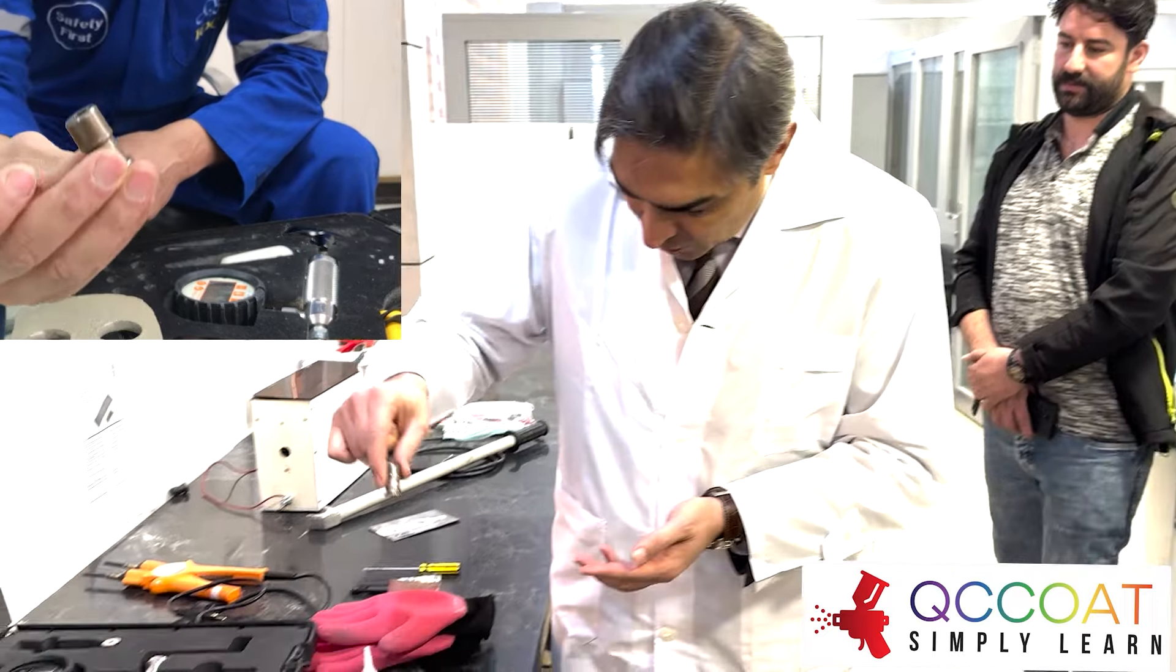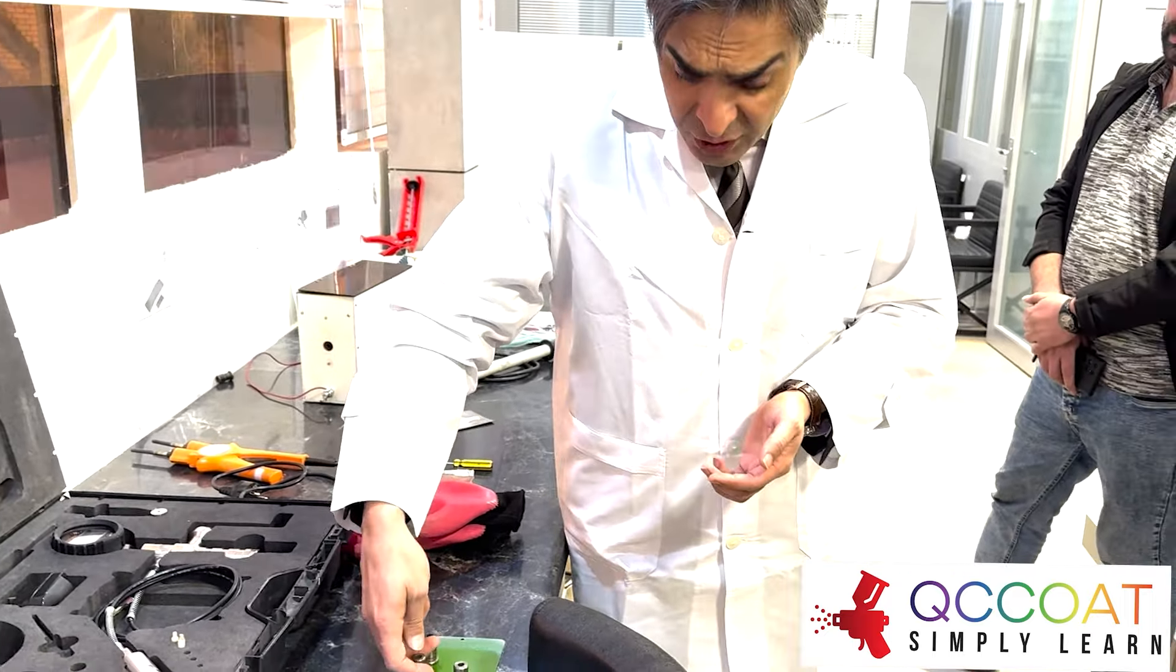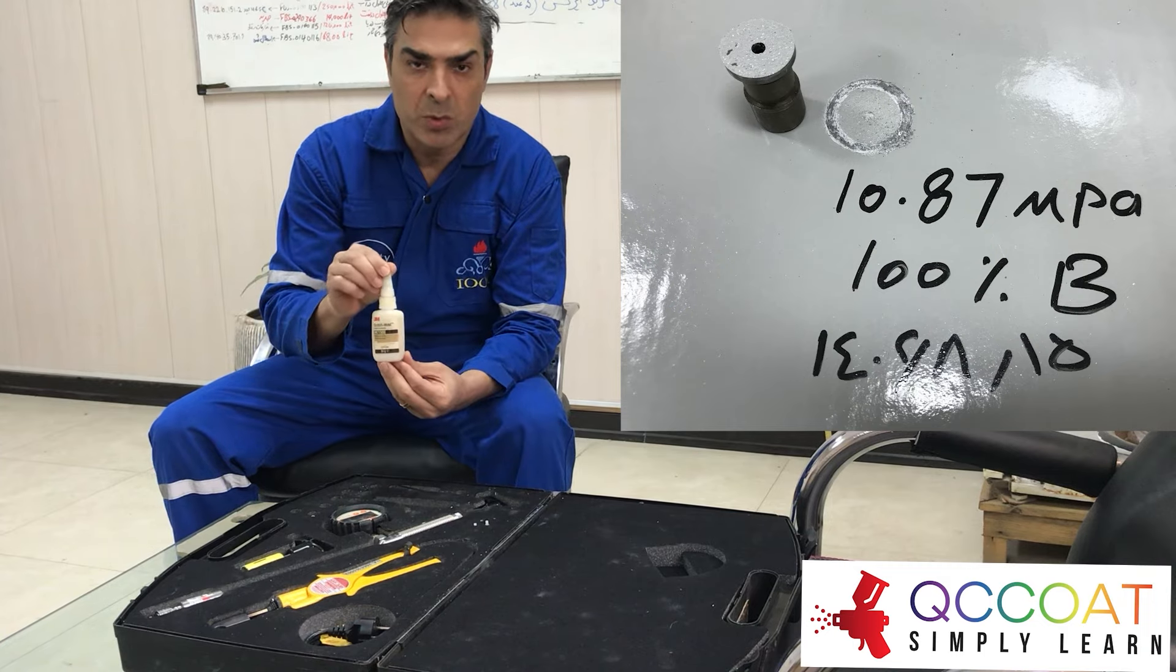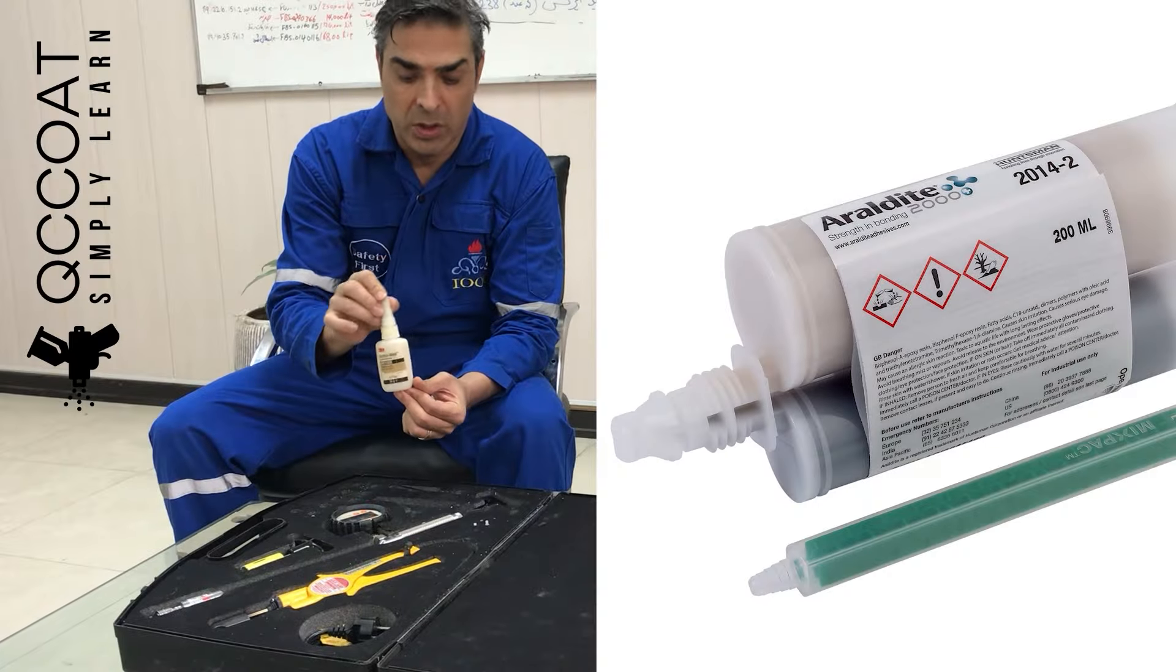Adhesives can be one component or two component, and the curing time varies from 30 minutes to 24 hours. The amount of adhesive strength must be more than the amount required by the test based on the project specifications. Two component epoxy adhesives are generally used for industrial paints.